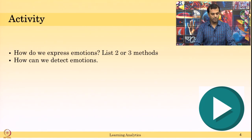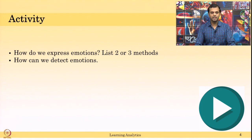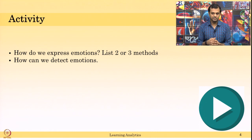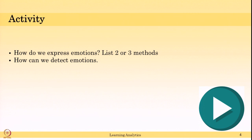So let us think about it — how do we express emotions? How do humans express emotions? Think about it and write down two or three ways we express emotions. If you can list those ways, then you can ask: how do you detect emotions when you are speaking with someone? Imagine you are speaking with another person who is expressing emotion — how you can detect that. Whatever modalities, whatever data you can collect to detect that emotion, think about it. Write down the answers and resume to continue.